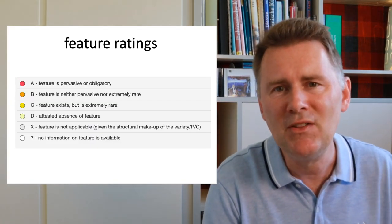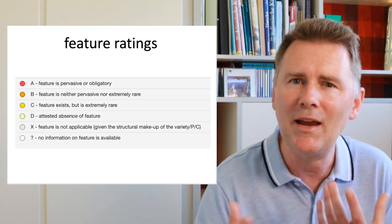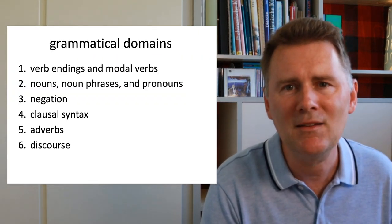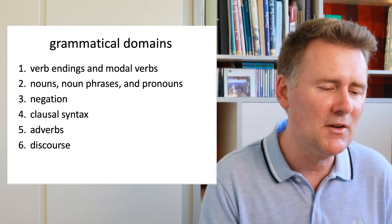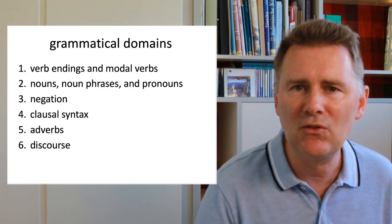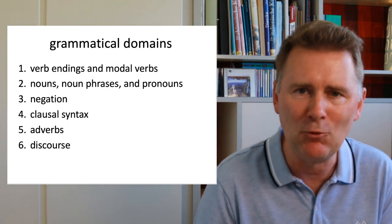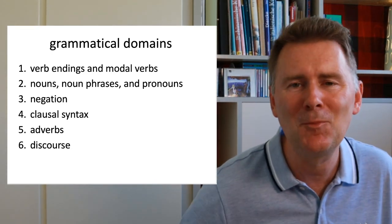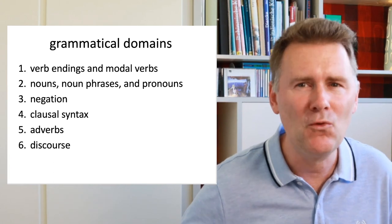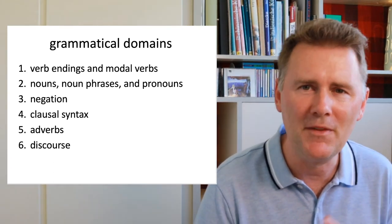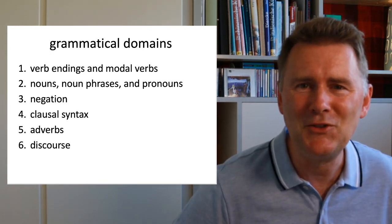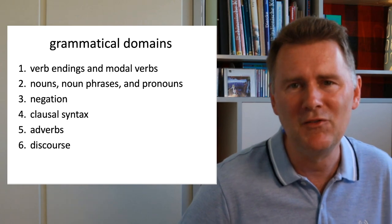The 235 features represent different grammatical domains. These areas include: features concerning verb endings and modal verbs; features concerning nouns, noun phrases, or pronouns; features to do with negation; clausal syntax — how relative clauses or complement clauses are formed; adverbs; and discourse — the pragmatic features of a given variety.